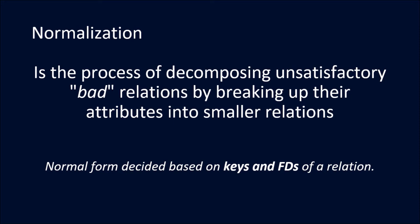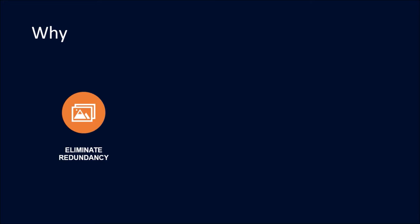Normal forms are decided based on keys and functional dependencies of a relation. Bad relations are relations which allow you to enter redundant data — that means repetition of the same data in a single table.